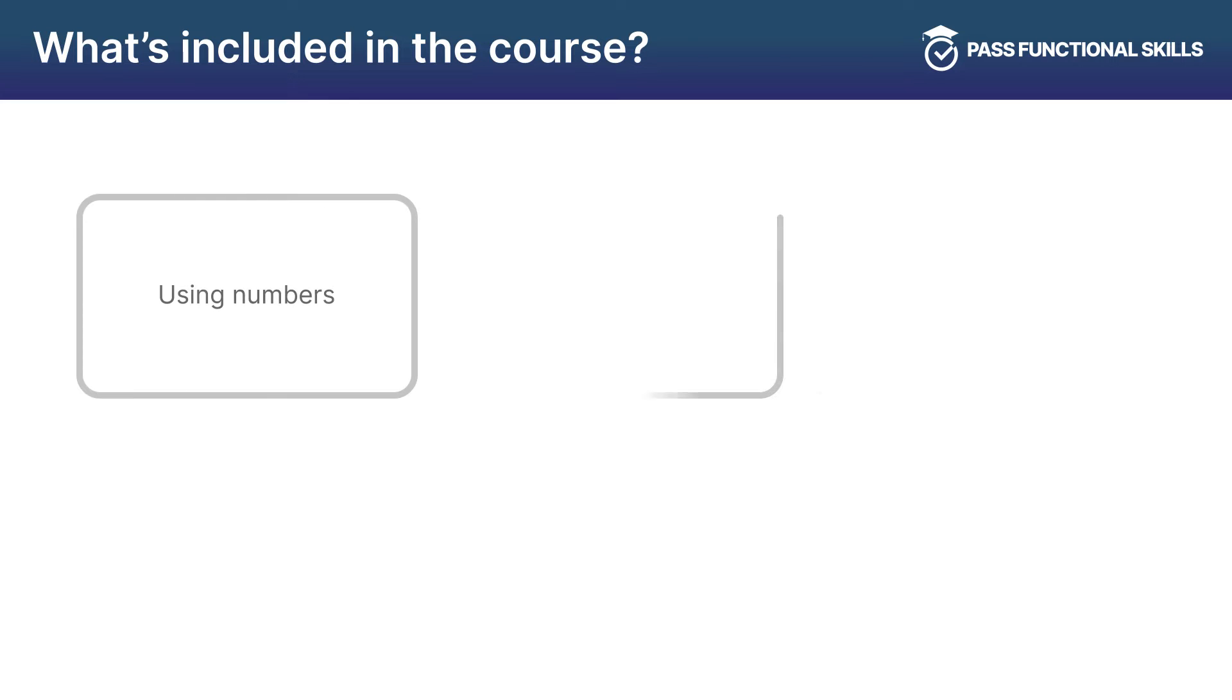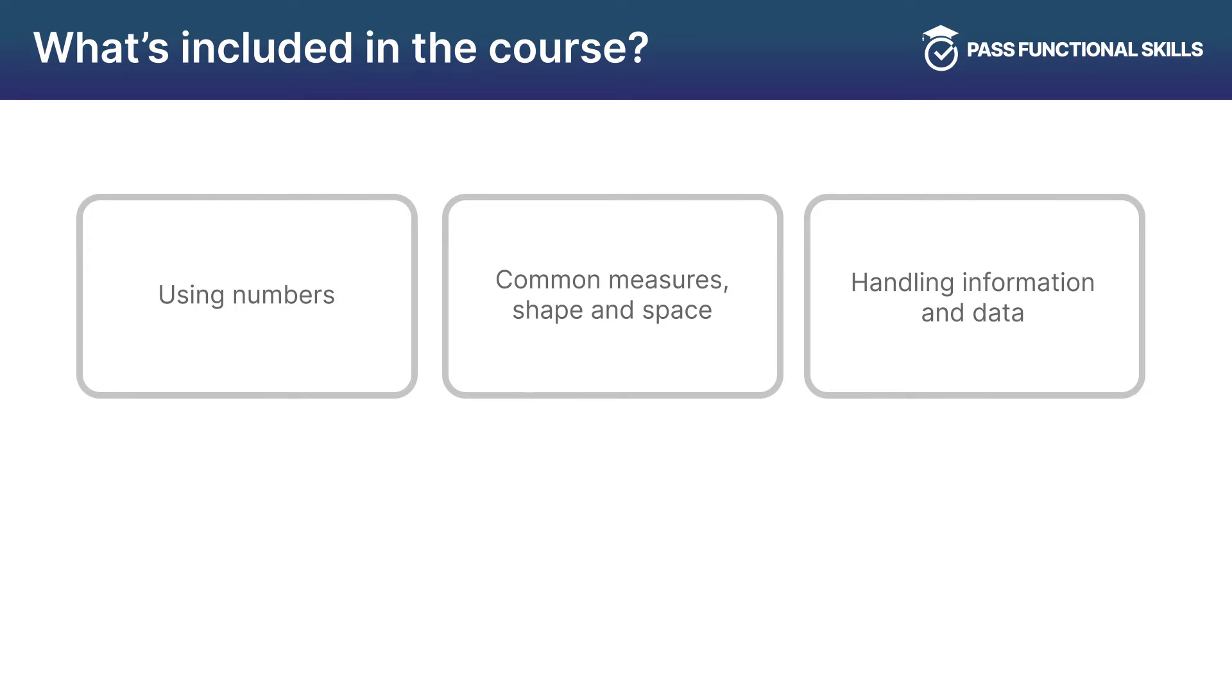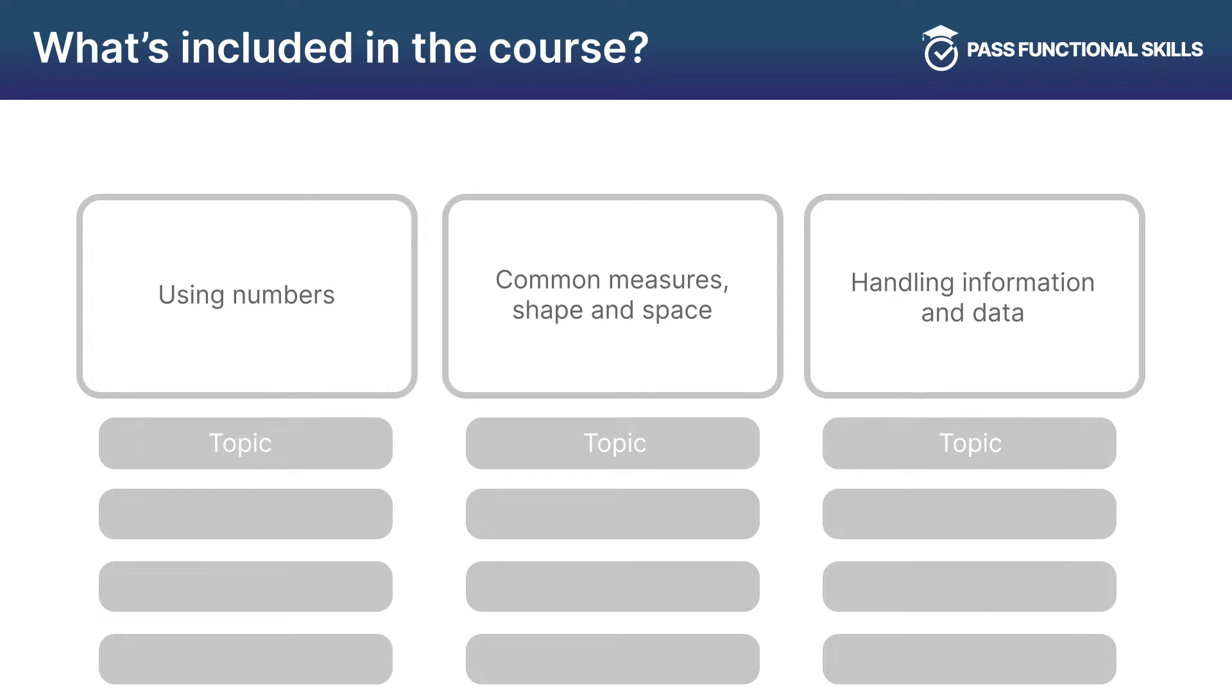The course is split up into three sections: using numbers, common measures, shape and space, and handling information and data, which is 35 topics in total, covering all aspects of the government specification.